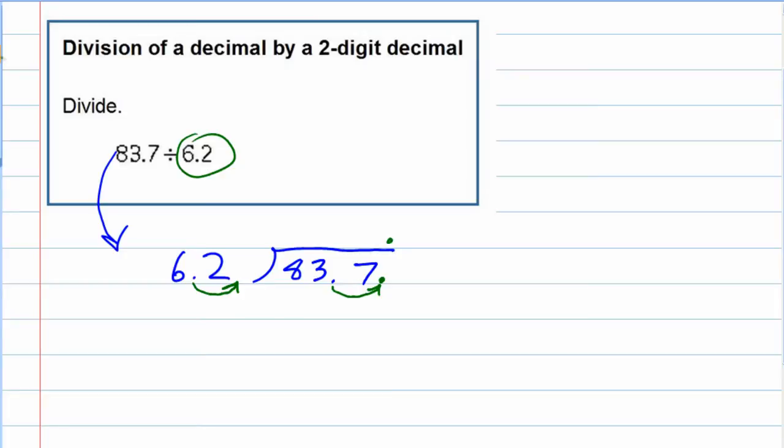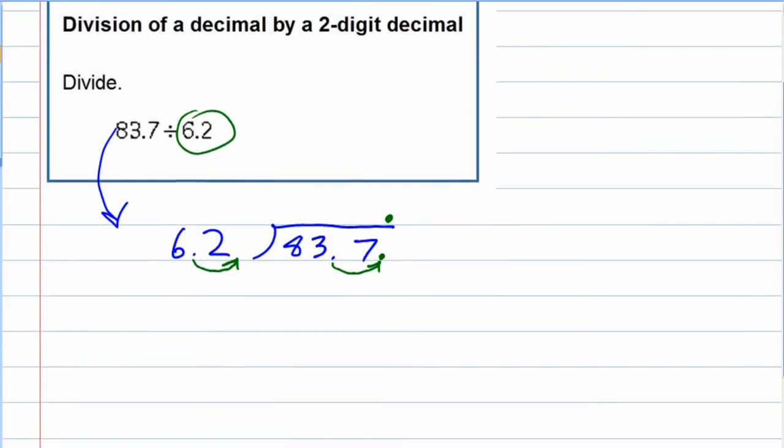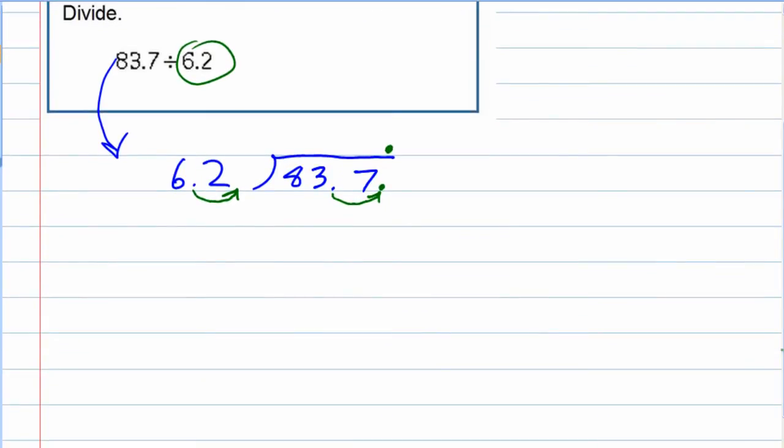Now, I can place my decimal. And I can do the division because now I'm actually dividing by 62 instead of 6.2. Cross that out.